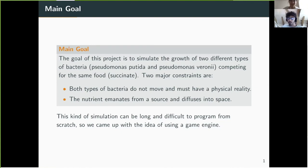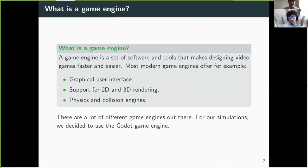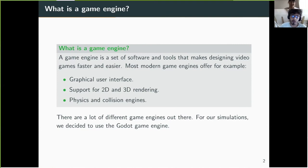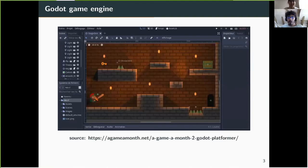We have two constraints: both bacteria types do not move, but they must have a physical reality — meaning they can push each other and are solid. The nutrient succinate emits from a source and diffuses into space. These kinds of simulations can be very tricky to program from scratch, which is why we tried to use a game engine to help us. A game engine is basically a set of tools that help people make video games such as Mario or Zelda.